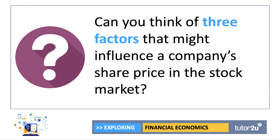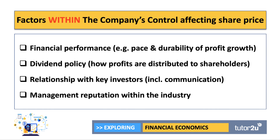In particular, think about the factors that are within the company's control, and think about maybe a factor which is outside a company's control — in other words, internal and external factors. What are some of the key factors that influence whether a company's share price goes up or goes down in the market?